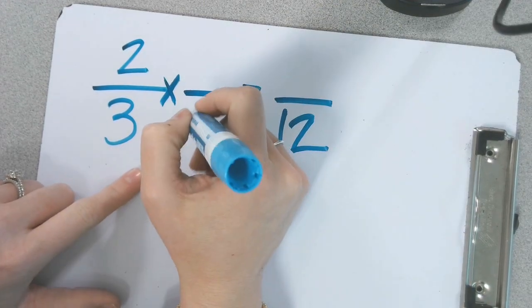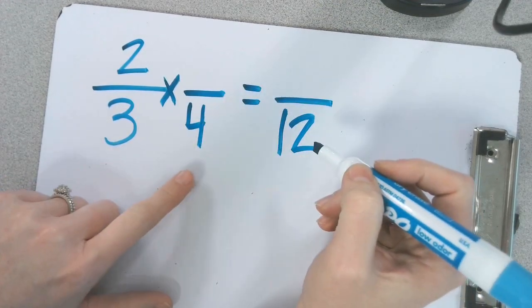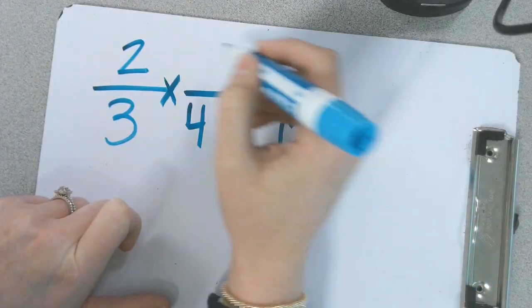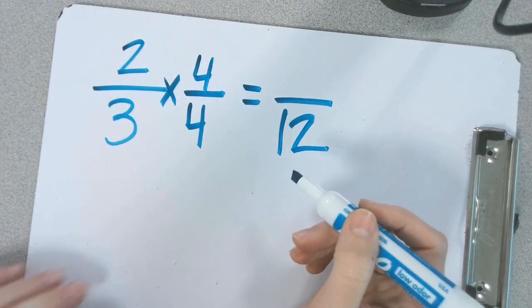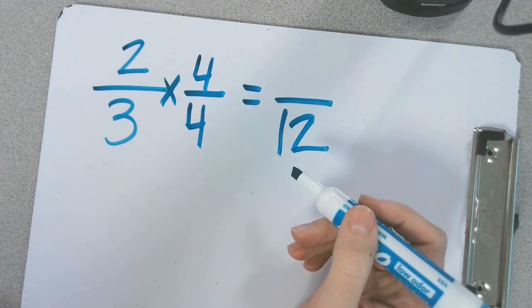4. But if I'm multiplying the denominator by 4, that means the entire fraction has to be what? 4 fourths. What is 4 fourths equivalent to? 1 whole.